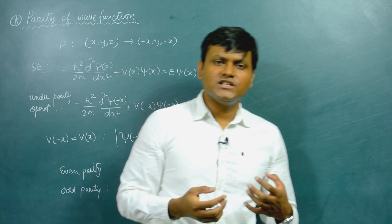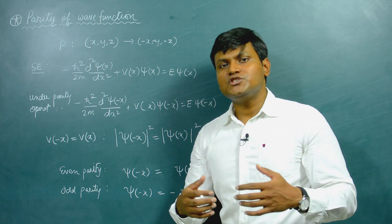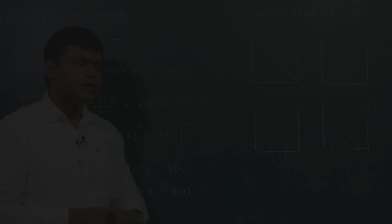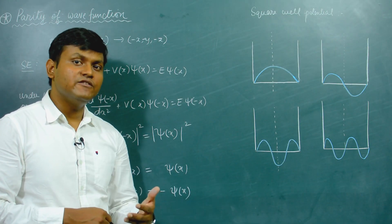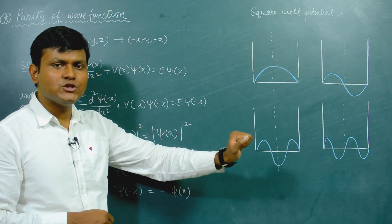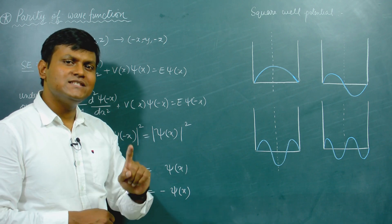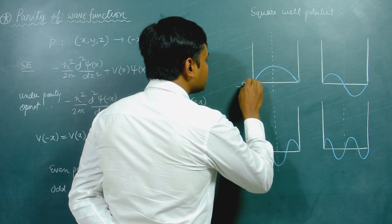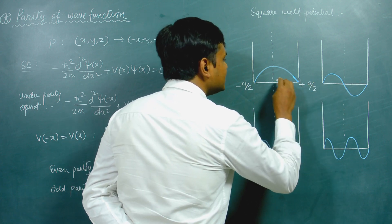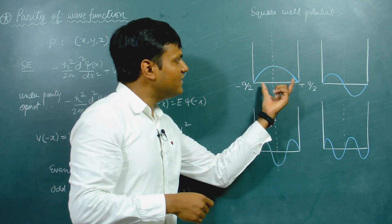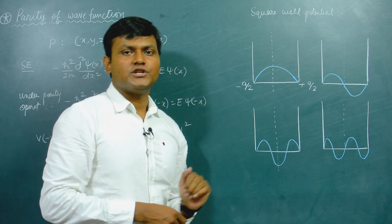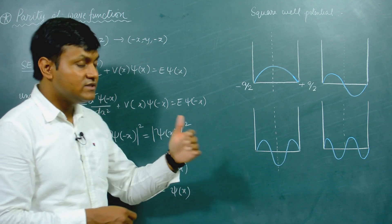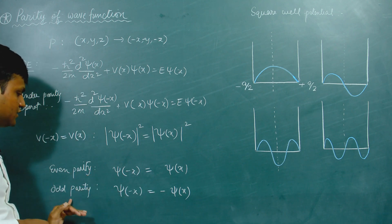One very simple example is that of the square well potential. Here I have drawn the first four wave function solutions of the infinite square well potential. If the infinite square well is centered at the origin — going from minus a/2 to plus a/2 — then the potential is symmetric with respect to reflection along the origin, satisfying V(−x) = V(x). Because of this, the wave function solutions consist of both even parity and odd parity wave functions.